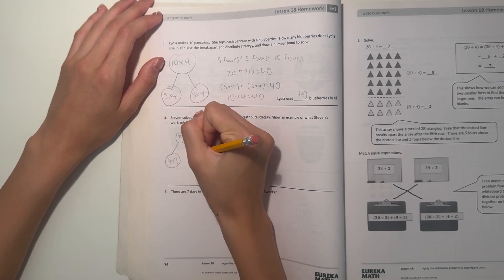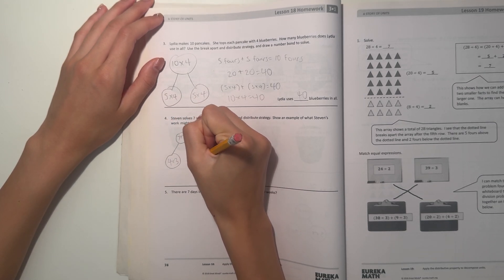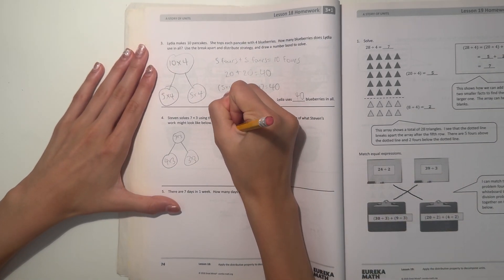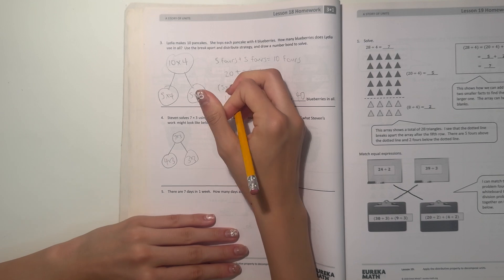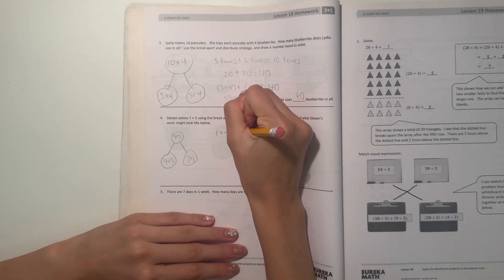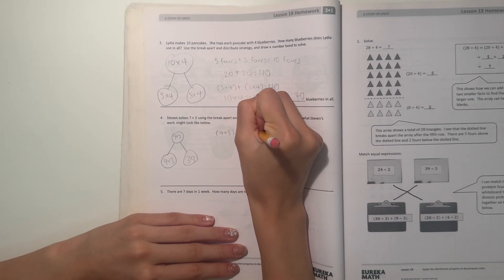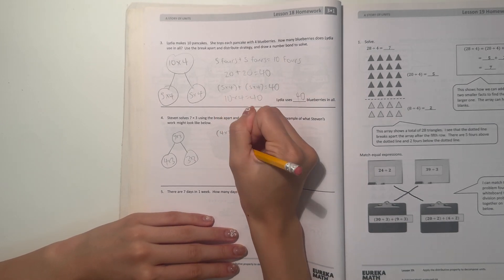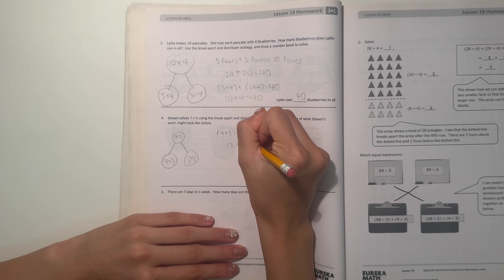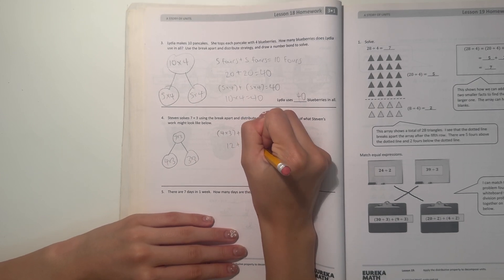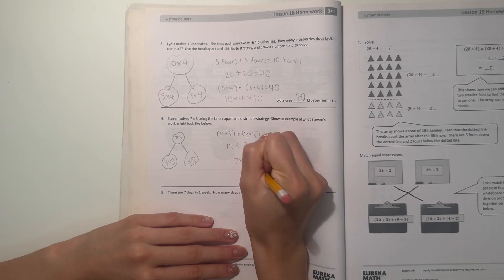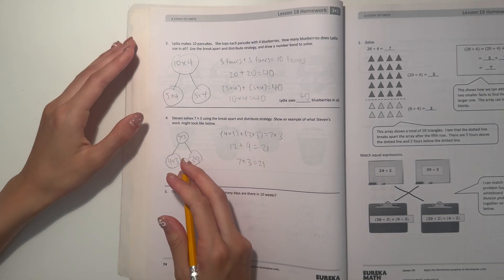plus three times three equals seven times three. So four times three is twelve, three times three is nine. So twelve plus nine equals twenty-one, which means seven times three equals twenty-one. So that could be an example of Steven's work.